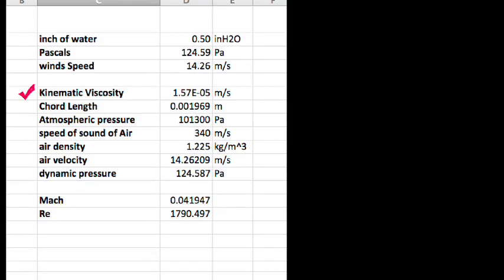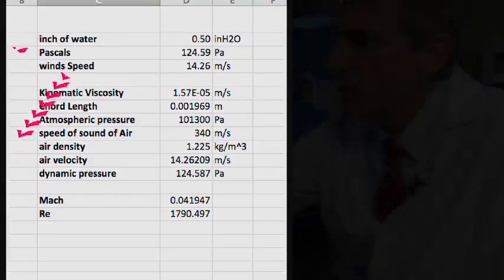Then these are all of the relevant parameters for the experiment. The kinematic viscosity of air, the chord length of the airfoil, the atmospheric pressure, the sound speed of air, the air density today, the air velocity in the wind tunnel, which is what we calculated above, and then the dynamic pressure. Together we can calculate the Mach number and the Reynolds number from this. So we can characterize this particular pressure profile.